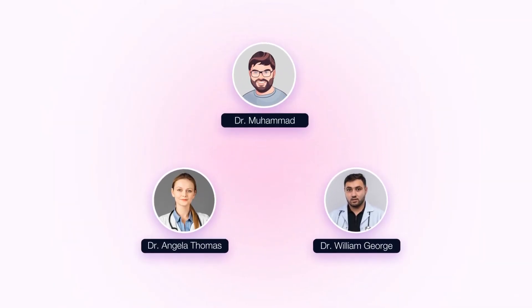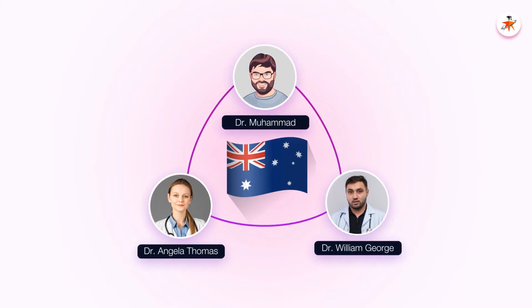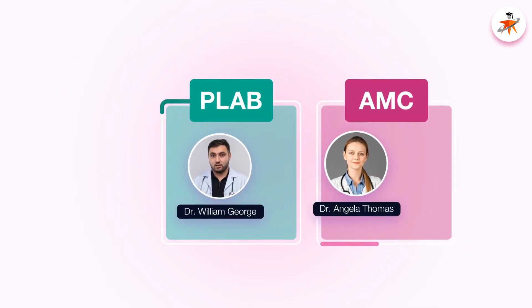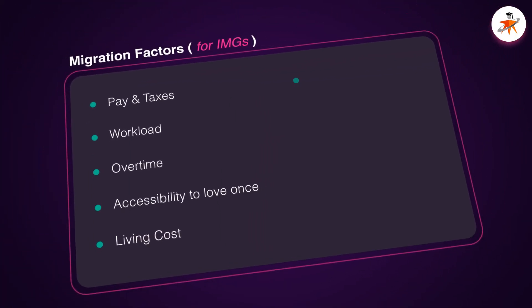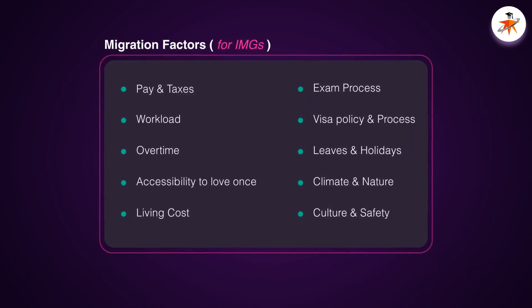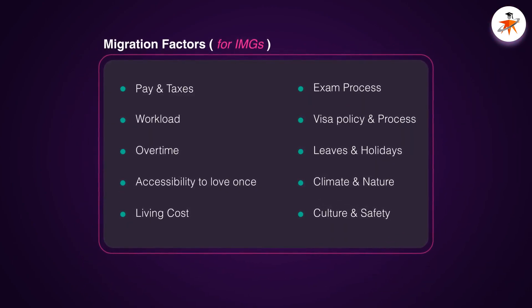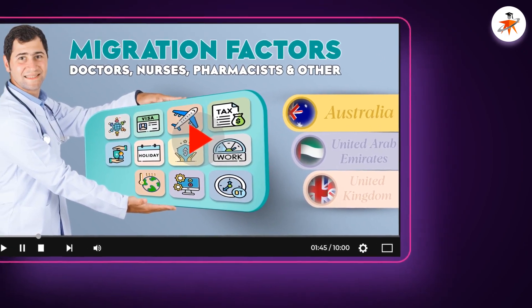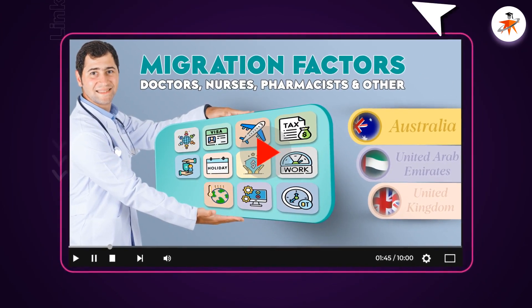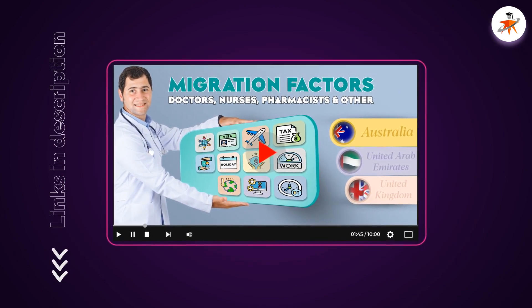Doctors who are willing to pursue their career in UK and Australia need to pass PLAB or AMC exam respectively. There can be many influencing factors convincing you to migrate to these or any other European country, especially when you are an international medical graduate, IMG. We have covered many such factors in a one-hour video helping you to make up your mind for any such country. We have provided this video link here as well as in the description section.